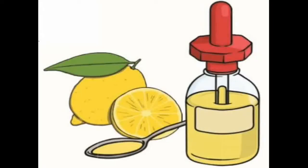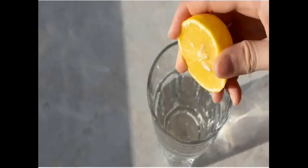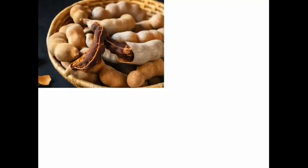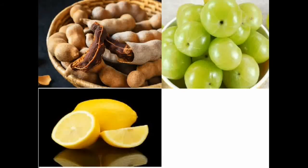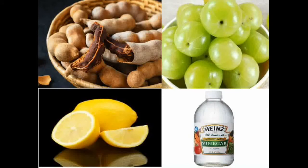Acids are any substances that have a sour taste. If you sprinkle lemon juice on water, the water will turn sour in taste. Substances like tamarind, amla, lemon, and vinegar have sour taste. All these substances are natural acids. They are weak in nature and are added to food for flavor.